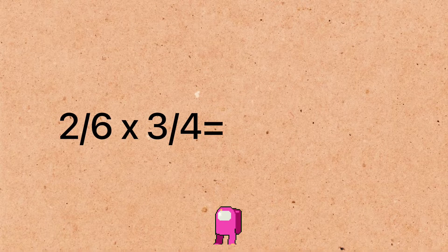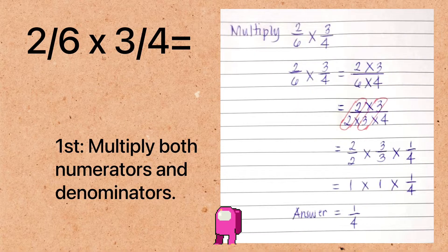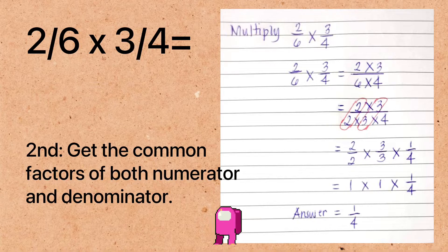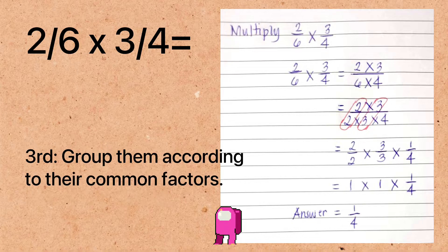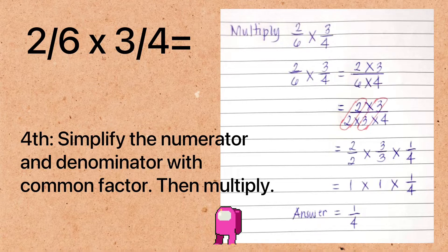How about this one? Multiply two-sixths times three-fourths. To get the answer, follow these simple steps. First, multiply both numerators and denominators. Second, get the common factors of both numerator and denominator. Third, group them according to their common factors — we got two-halves and three-thirds. Fourth, simplify the numerator and denominator with the common factor, then multiply. Two-halves is equivalent to one, three-thirds is equivalent to one, then copy one-fourth. Therefore, two-sixths times three-fourths equals one-fourth.